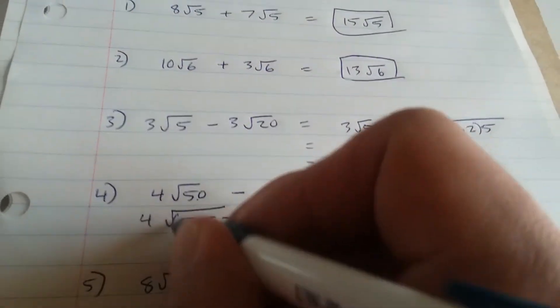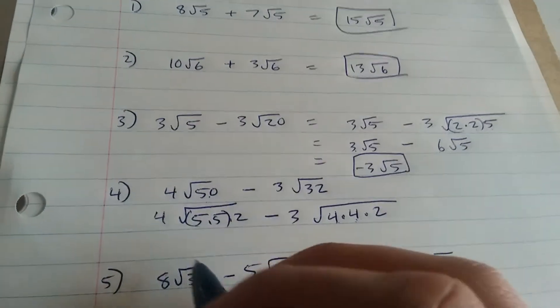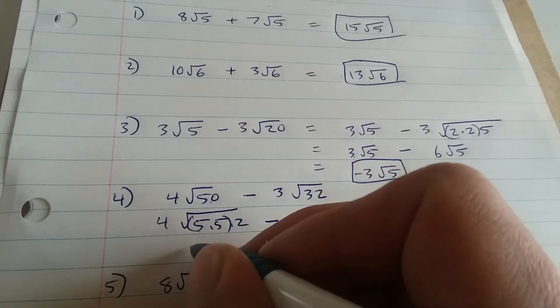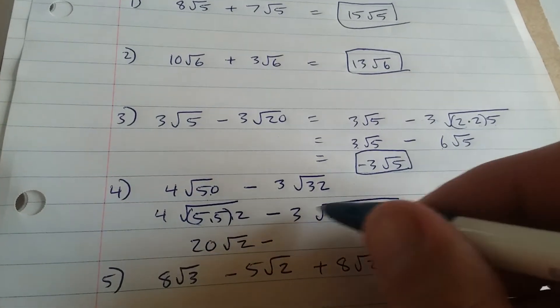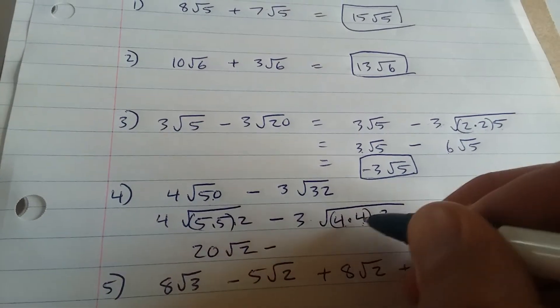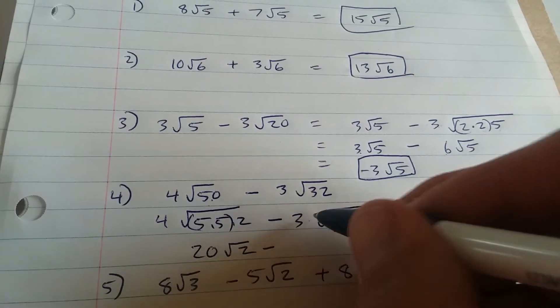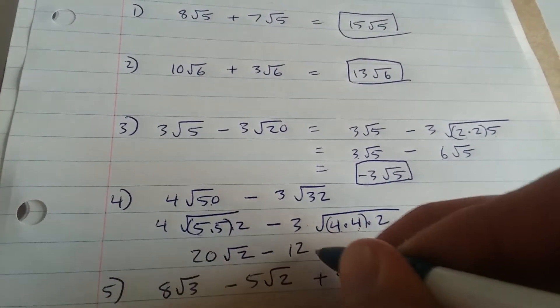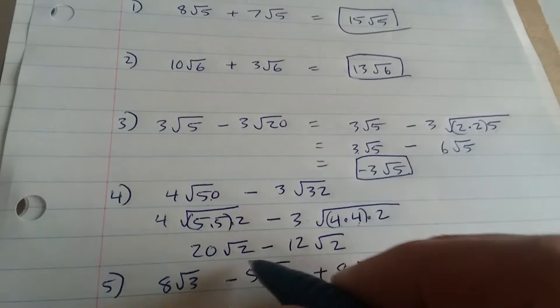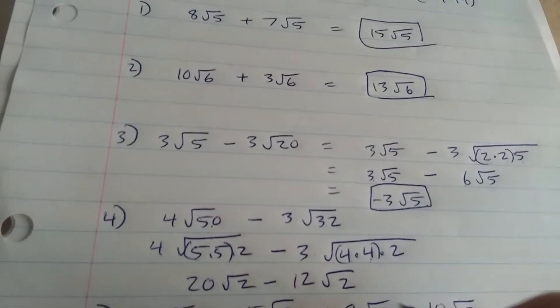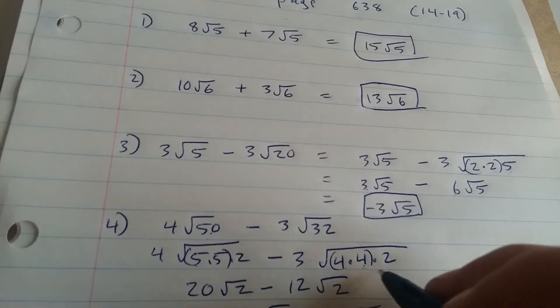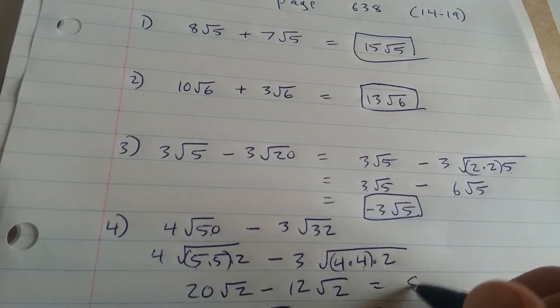We pull this pair of 5's out. I have 4 times 5, which is 20. 20 root 2 minus 3. We're going to have a pair of 4's you can pull out. So you can pull 4 outside. So 3 times 4 is 12 minus 12 root 2. Now the number under the root matches, and we can subtract. 20 minus 12, that is 8. 8 root 2.